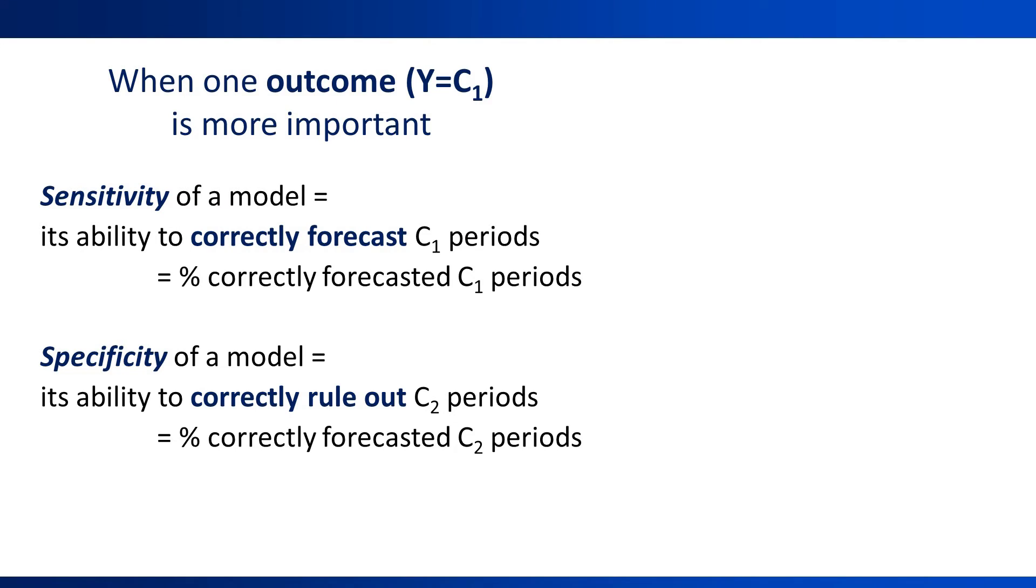Here are two more popular predictive performance measures that are based on the four numbers from the classification matrix. The sensitivity of a model is its ability to forecast ones correctly. In our example, it's the ability of the model to detect rainy days. The specificity of a model is its ability to rule out the zeros. In our example, it's the ability of the model to rule out non-rain days. Sensitivity and specificity are always reported together as a pair.